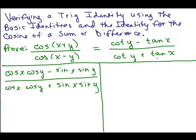And the natural thing that comes to mind is to change the cotangents and tangents in terms of sines and cosines. So let's do that.